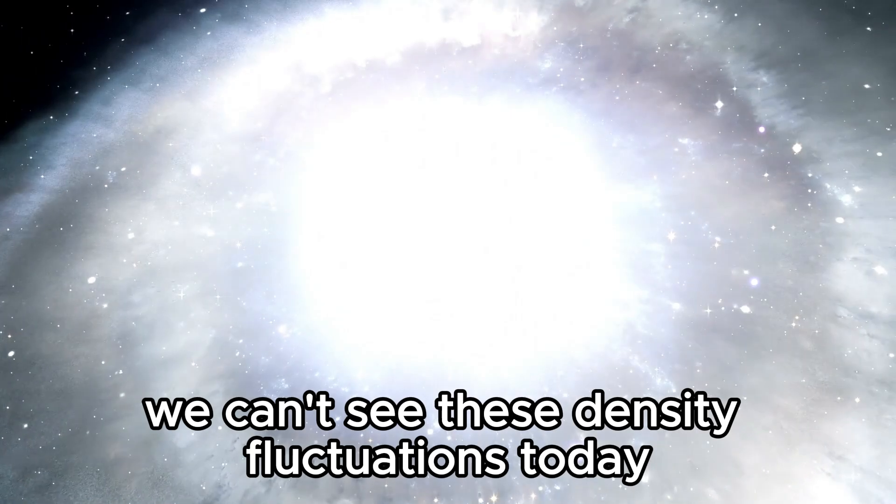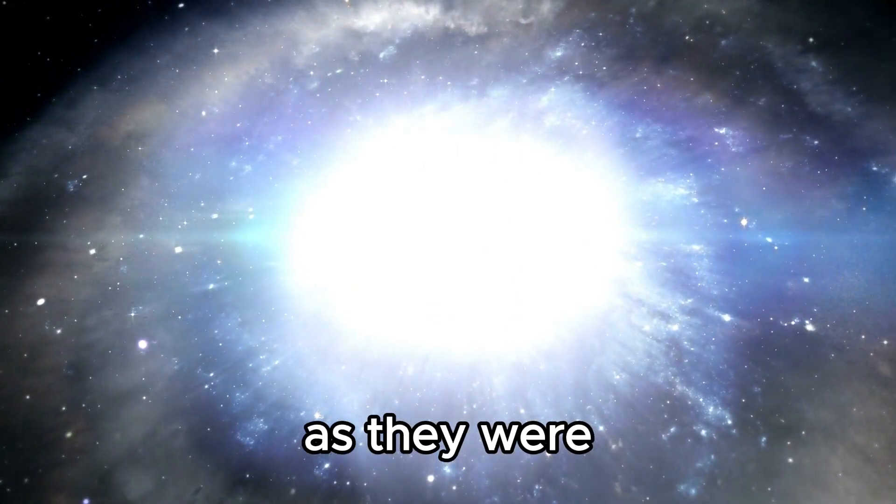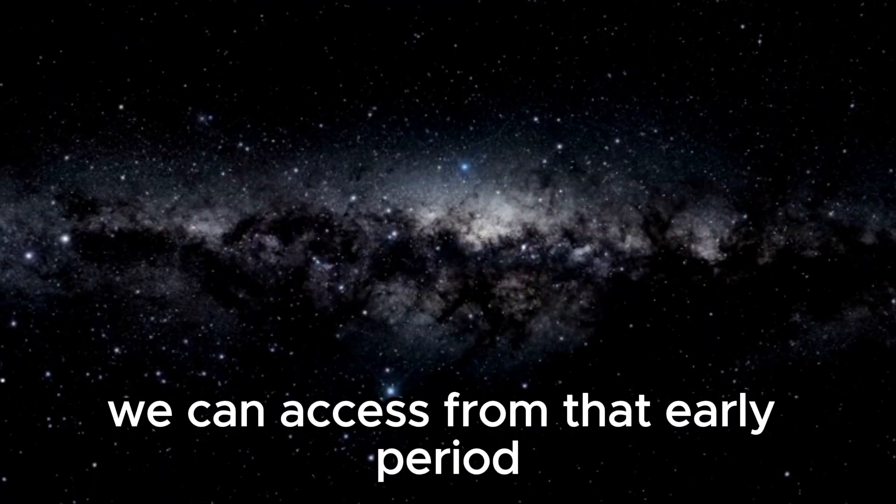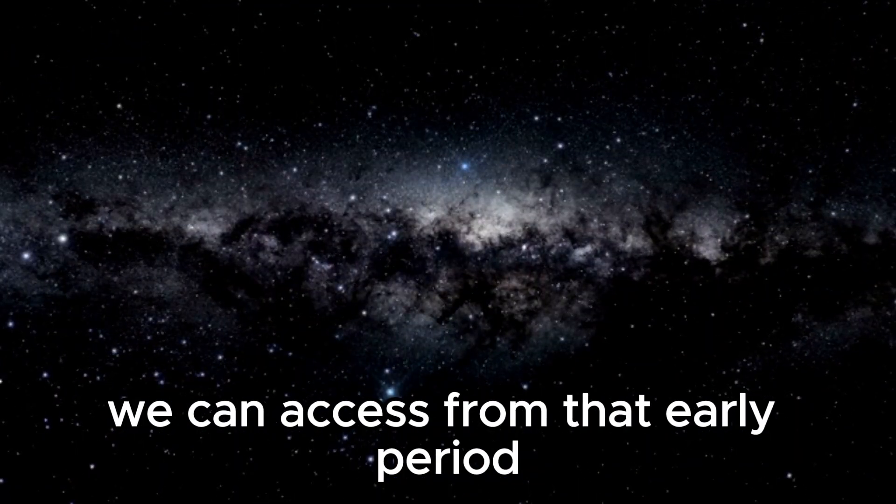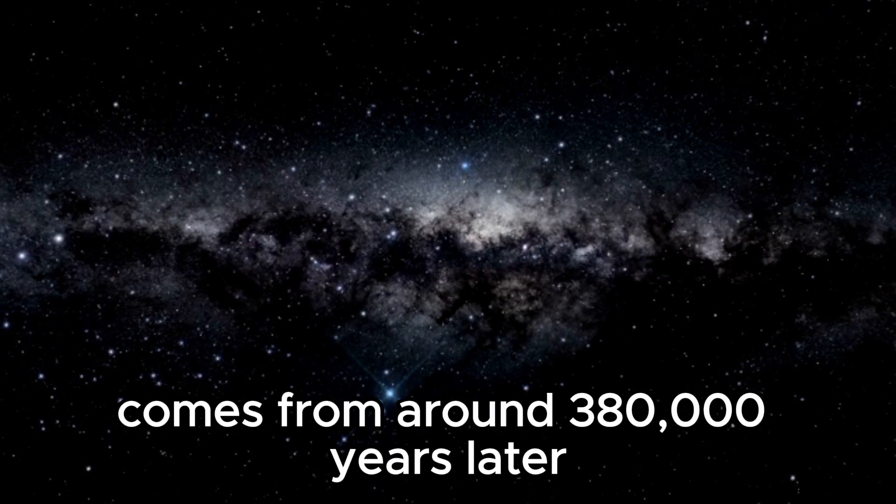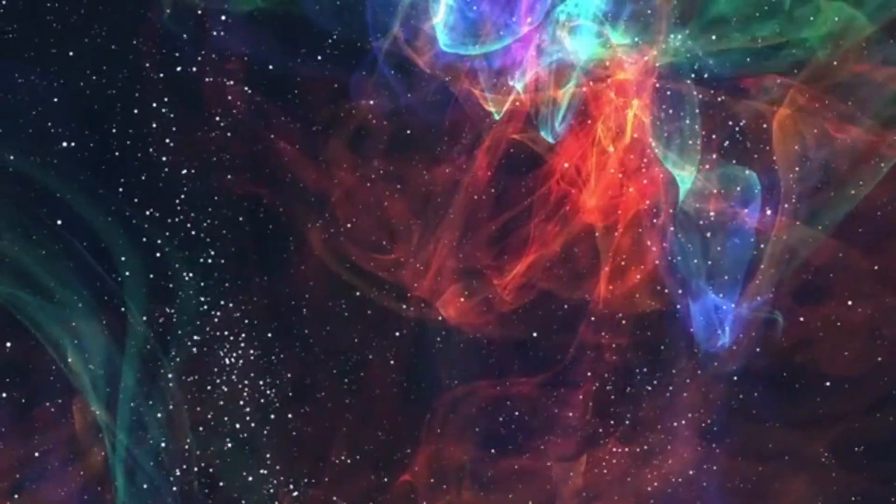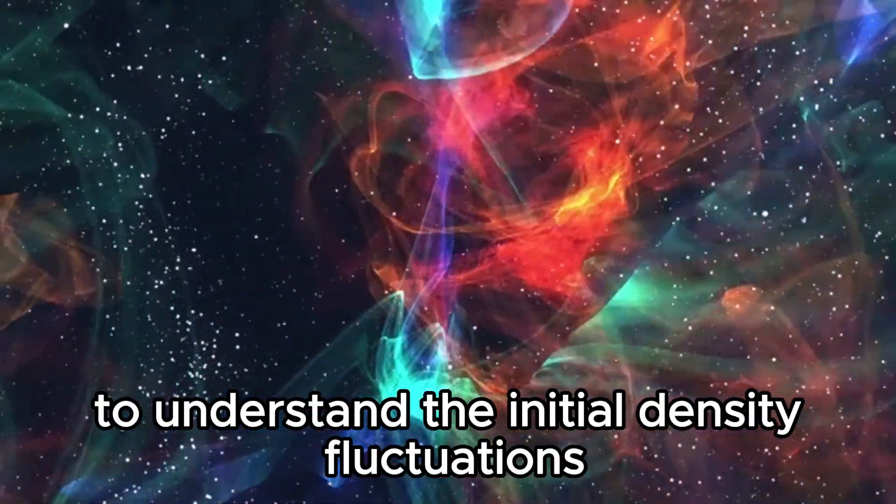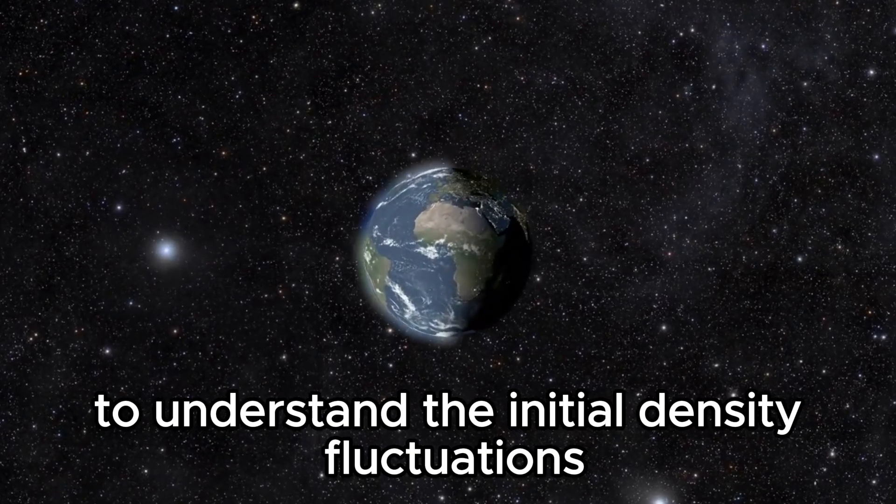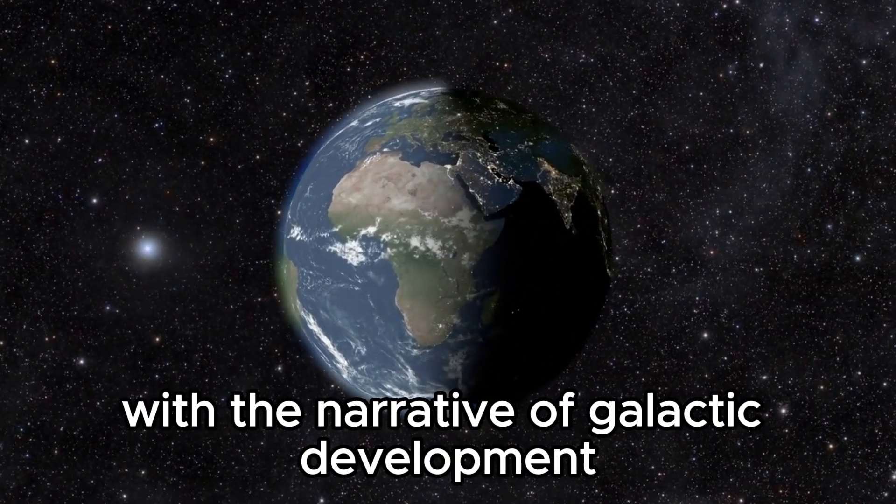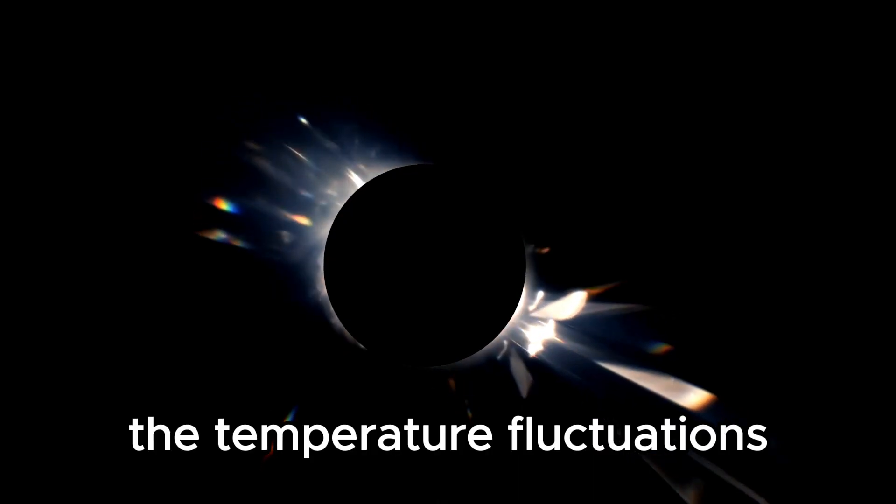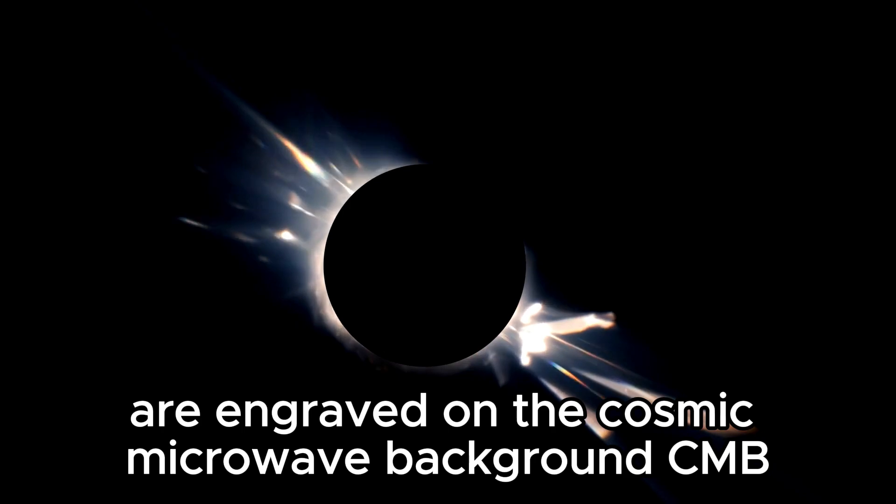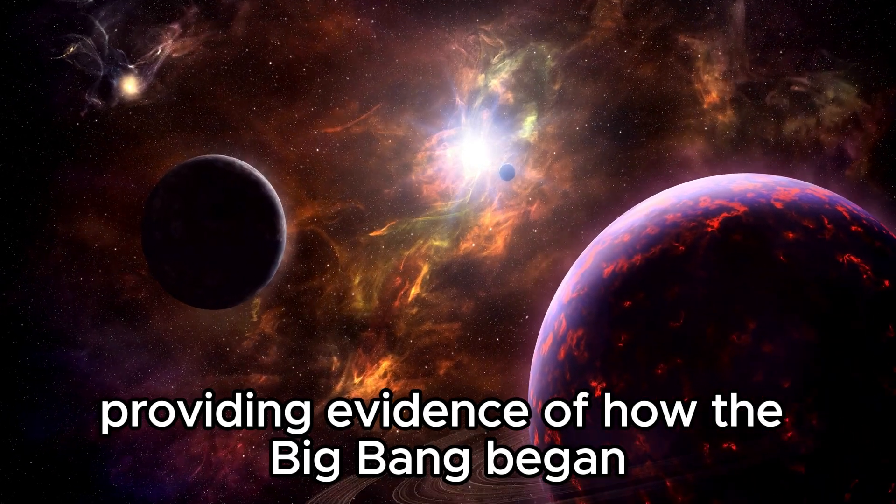We can't see these density fluctuations today as they were when the universe initially went through the hot Big Bang. There are no visual imprints we can access from that early period. The first observable imprint comes from around 380,000 years later, after going through vast affiliations. Nonetheless, we can extrapolate back to understand the initial density fluctuations, finding something consistent with the narrative of galactic development. The temperature fluctuations are engraved on the cosmic microwave background, CMB, providing evidence of how the Big Bang began.